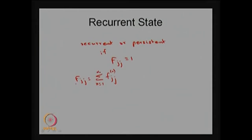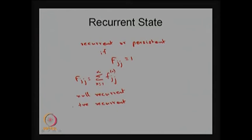We can classify the recurrent state into two forms: one is called null recurrent, and the other one is called positive recurrent, based on the mean passage time value. Based on capital F_jj, we classify whether the state is recurrent. Based on the mean first passage time, we classify whether that recurrent state is null recurrent or positive recurrent. If mu_jj is a finite value, then that recurrent state is a positive recurrent state. If mu_jj is infinite — meaning on average the first passage time is infinite — then that recurrent state is called a null recurrent state.